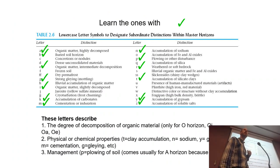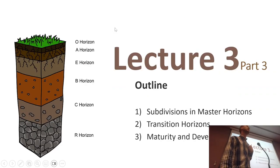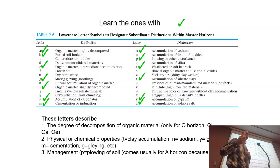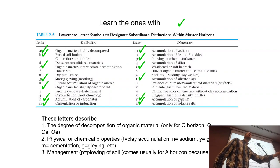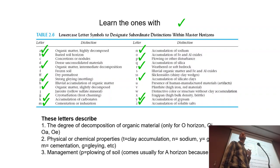Here is the list of subordinate horizons that you should learn. You don't need to memorize the exact words, but by reading and understanding them, when they are mentioned again you will know if the identification is correct or not. For example, BT is not carbonate accumulation — that would be BK. The goal is understanding what they mean, not memorizing exact phrasing.